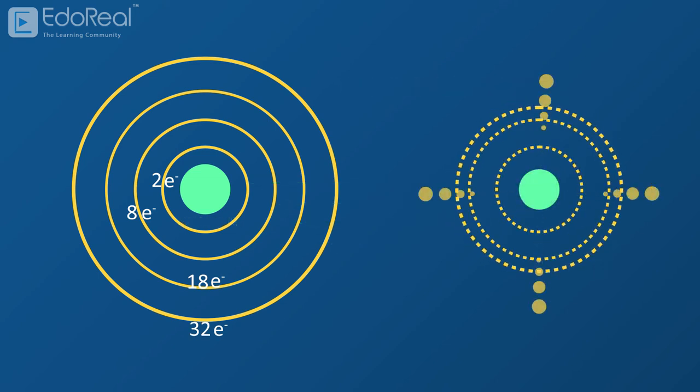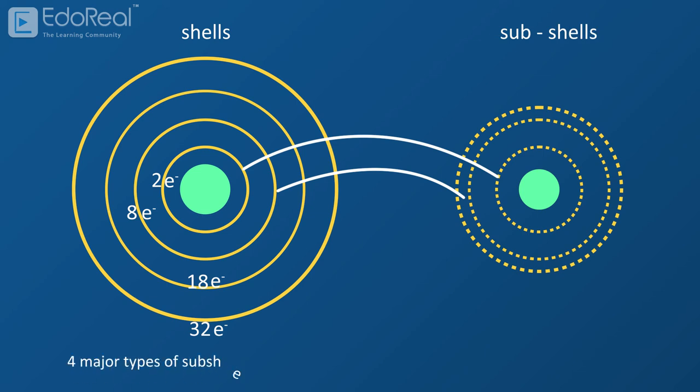The area in which an electron moves within a shell is called a subshell. There are 4 major types of subshells that can be found in a shell. The number of subshells present in a shell is based on the shell number. They are named as S, P, D, F based on the shape of the subshell.